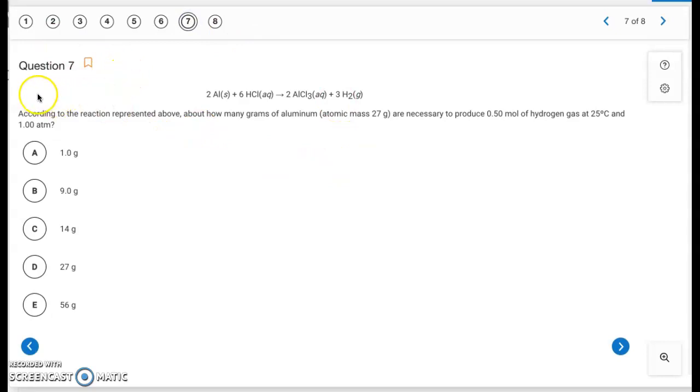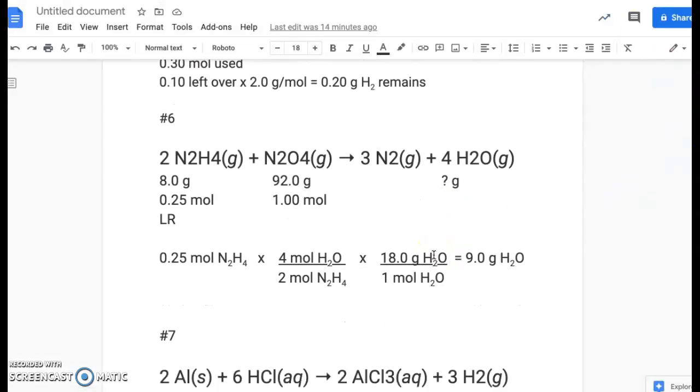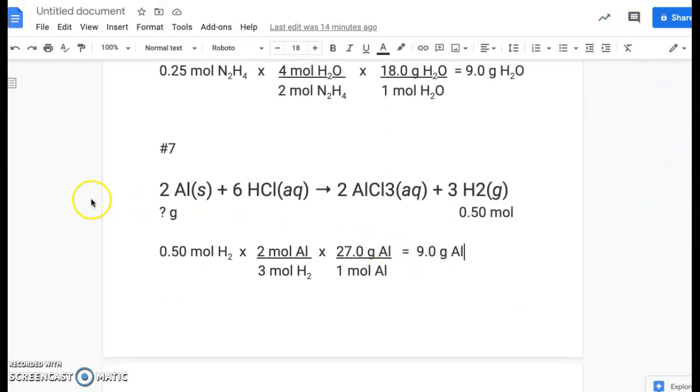Okay, question 7. According to the reaction represented above, about how many grams of aluminum with atomic mass 27 are necessary to produce 0.5 moles of hydrogen gas at 25 degrees Celsius and 1 atmosphere. So this is just a stoichiometry problem. It's not going to be a limiting reactant. We're just given an amount of product, and we're saying, well, how much of this reactant do we need to get there?